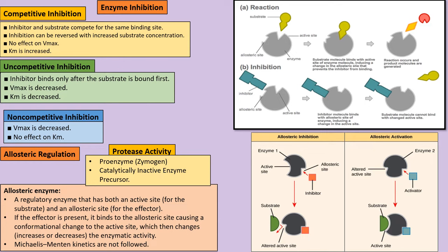An allosteric enzyme is a special kind of enzyme that has an active site for the substrate and an allosteric site for the allosteric regulator. Once the allosteric regulator binds to the allosteric site, it changes the shape of the active site, which can either increase or decrease the rate of reaction.